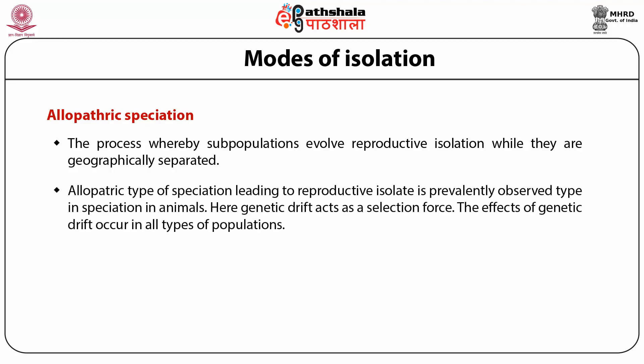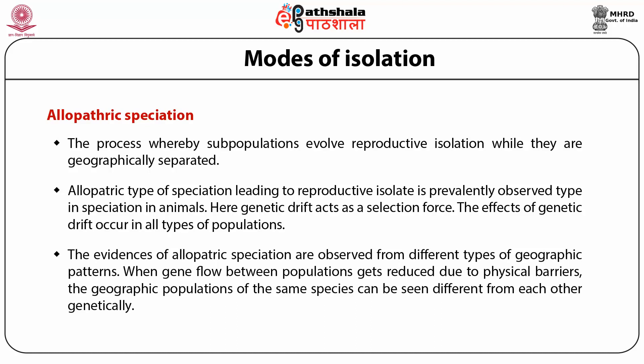Allopatric speciation leading to reproductive isolate is a prevalently observed type of speciation in animals. Here, genetic drift acts as a selective force. The effect of genetic drift occurs in all types of populations, particularly in populations of small size. The habitat types of the two populations also play a role with respect to the effective role of natural selection. Evidence of allopatric speciation is observed from different types of geographical patterns. When gene flow between populations gets reduced due to physical barriers, geographical populations of the same species can be seen as genetically different from each other — for example, island populations.